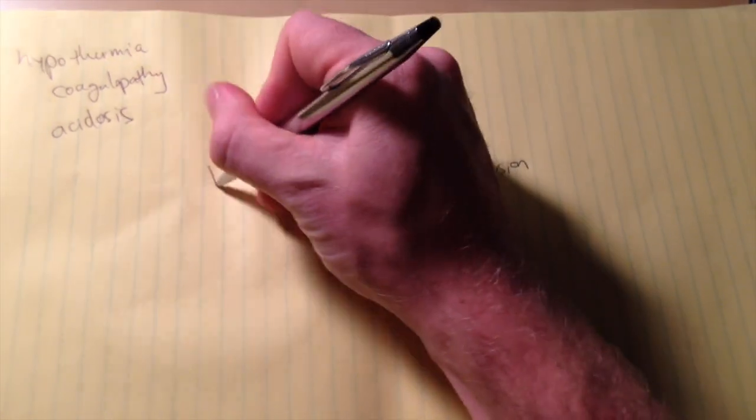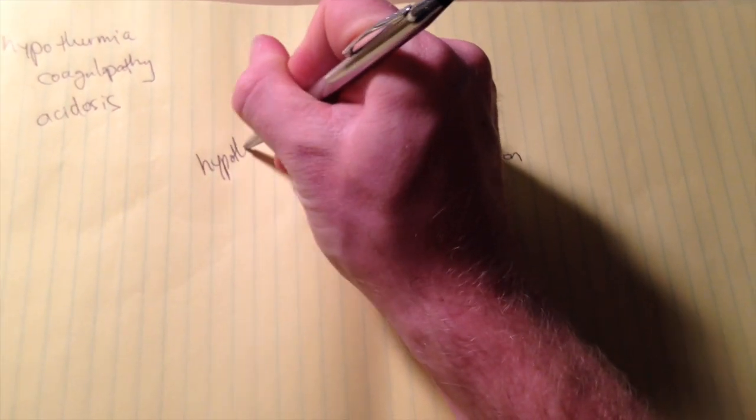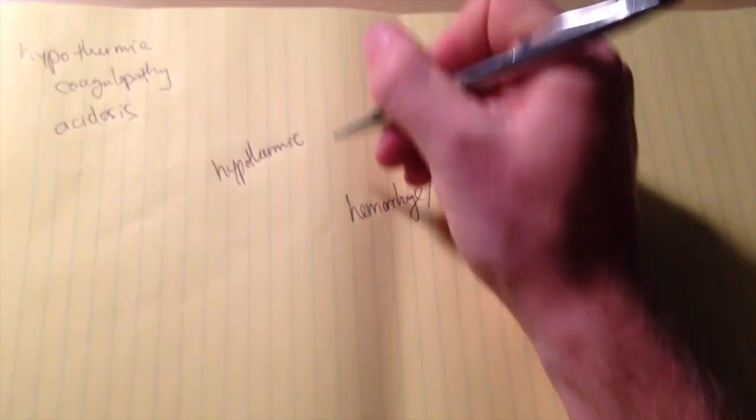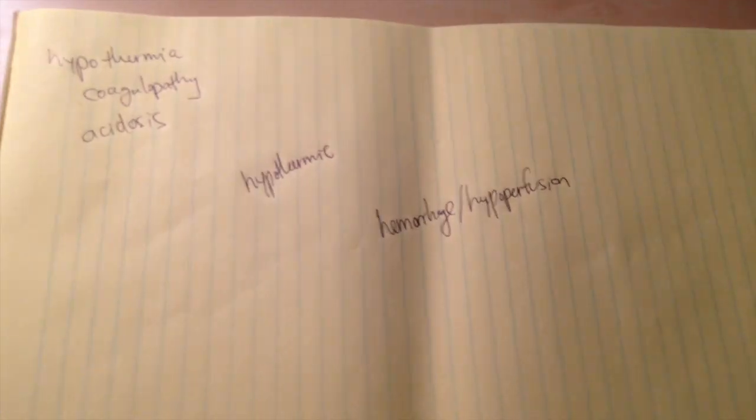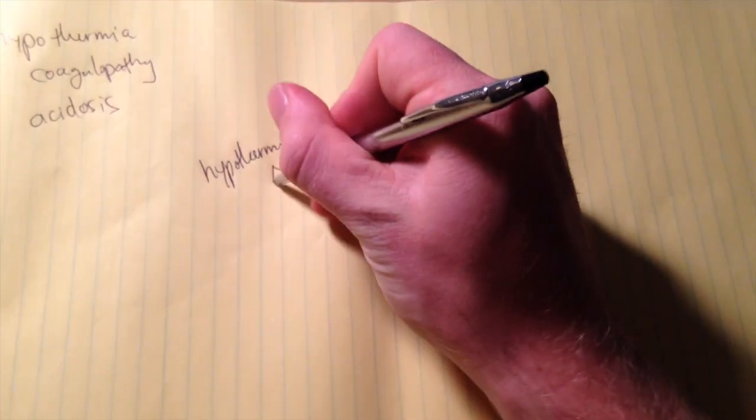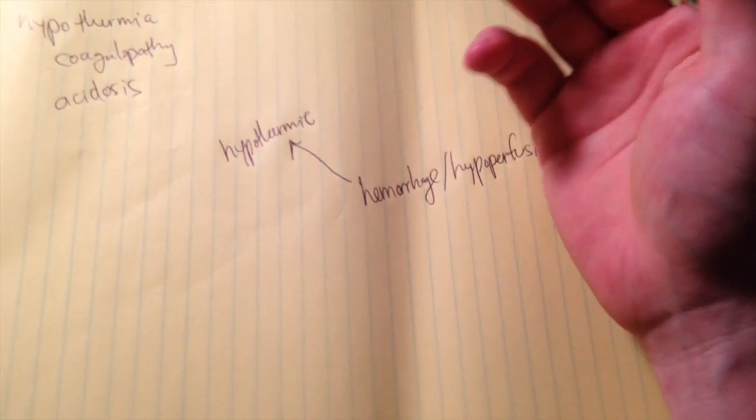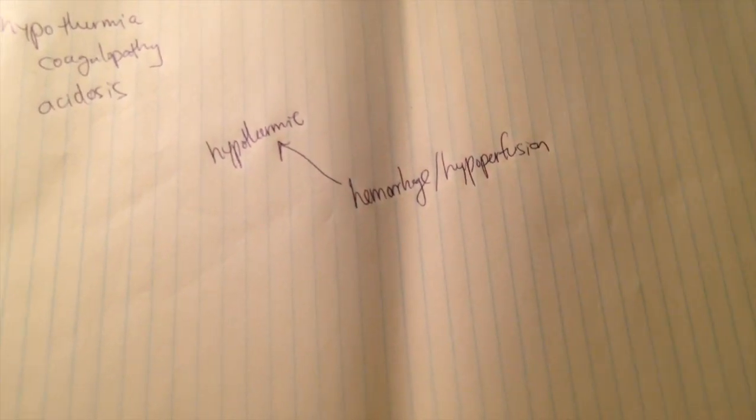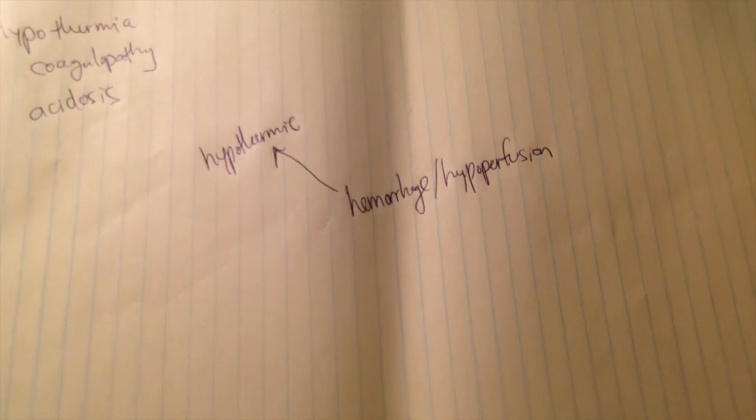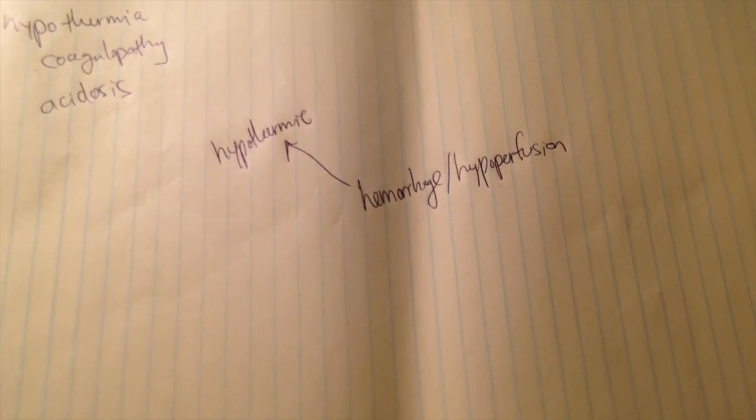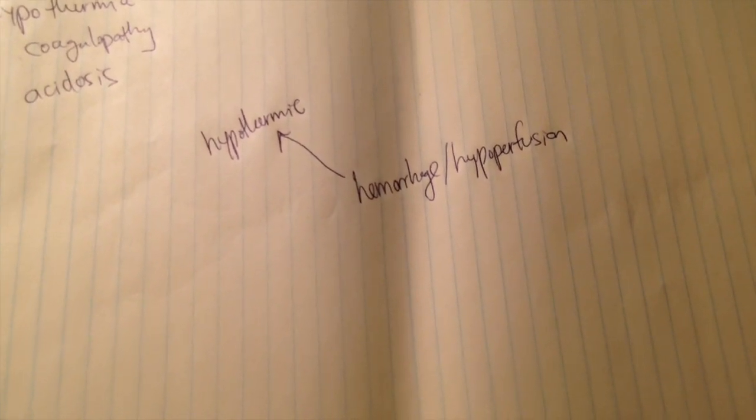It's easy to understand why that might make somebody hypothermic. Someone who's been in a traumatic situation, they're going to bleed and they're going to be hypovolemic. They may have something like a traumatic brain injury, they may be intoxicated. All these things are going to decrease the body's ability to regulate its core body temperature.